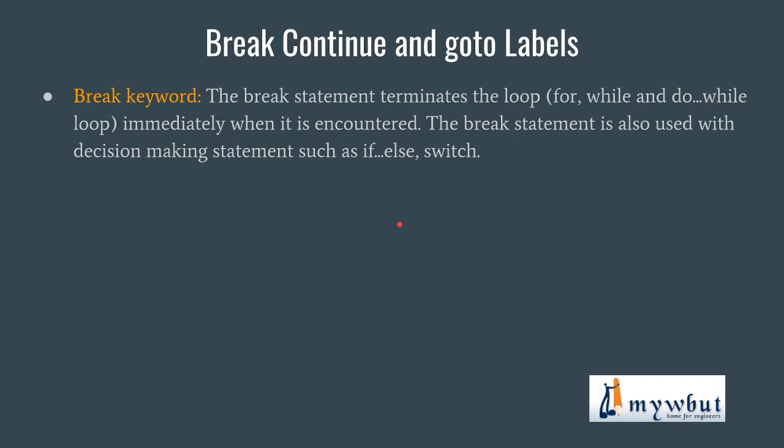What the break keyword does is: whenever you have a loop and you don't want the loop to continue till the endpoint comes — suppose you have a loop running and you want to terminate before the endpoint — in that case you can use the break keyword. The break keyword acts like a trigger which can take you out of the loop. The break statement terminates the loop — for, while, and do-while — immediately when it is encountered.